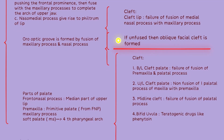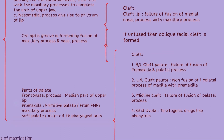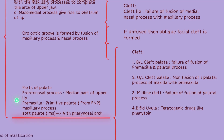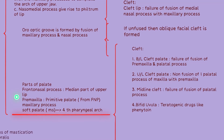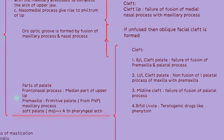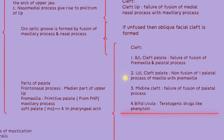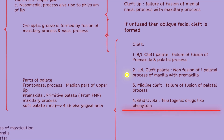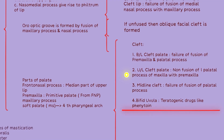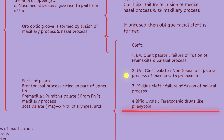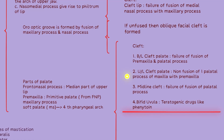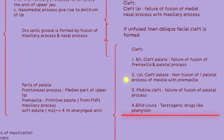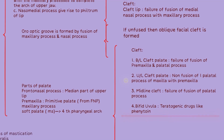If unfused, an oblique facial cleft is formed. The palate is formed from multiple components. The frontal nasal processes form the median part of the upper lip. The premaxilla forms the primitive palate and maxillary processes form the soft palate. Failure of fusion between the premaxilla and palatal processes can lead to bilateral cleft palate. Non-fusion of one palatal process with the premaxilla results in a unilateral cleft palate. A midline cleft can occur due to failure of fusion of the palatal processes. Also, teratogenic drugs like phenytoin can cause a bifid uvula, where the uvula is split into two parts.